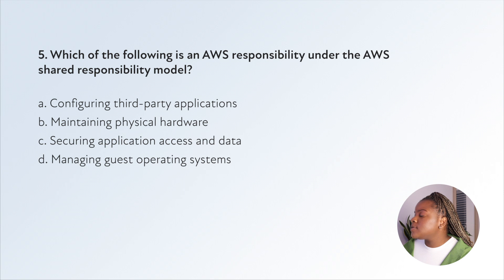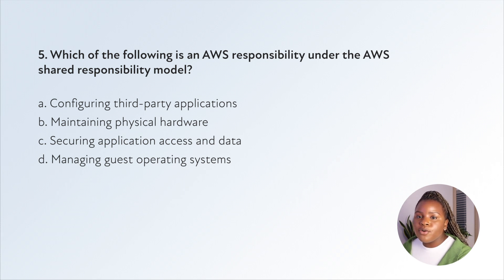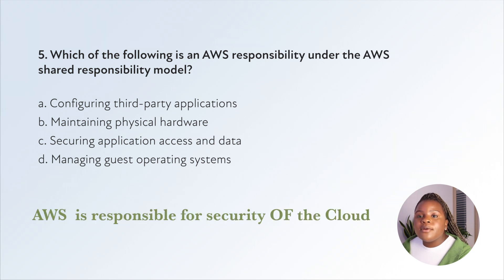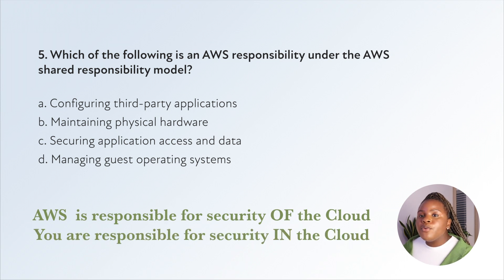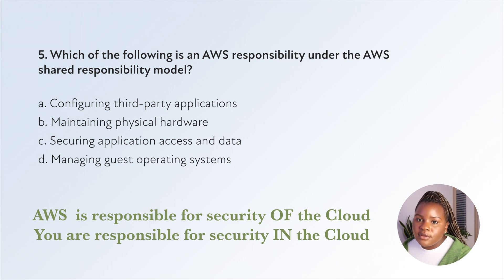Question five: which of the following is an AWS responsibility under the AWS shared responsibility model? The shared responsibility model can be summarized in one sentence: AWS is responsible for security of the cloud — the physical hardware and things — whereas you are responsible for security in the cloud, such as your EC2 instances.